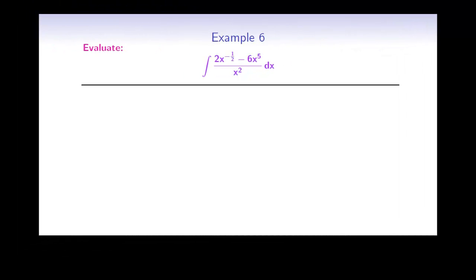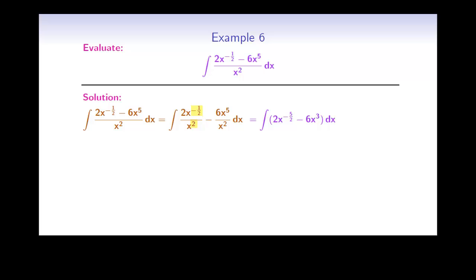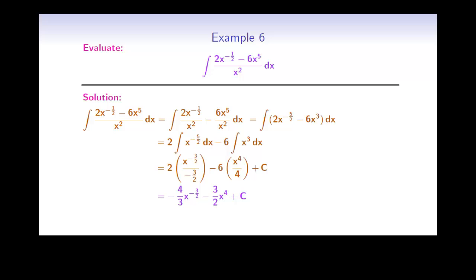Here is another example, this time of a quotient. There is no simple rule for evaluating the integral of a quotient, but we can rewrite it as two smaller quotients. Each smaller quotient is then simplified by subtracting the exponents: negative one half minus 2 becomes negative 5 over 2, and 5 minus 2 becomes 3. Now we integrate by using the power rule on each part — adding 1 to the exponent and dividing by the new exponent. The final answer is negative 4 over 3 times the square root of x cubed, minus 3 over 2 times x to the power of 4, plus C.